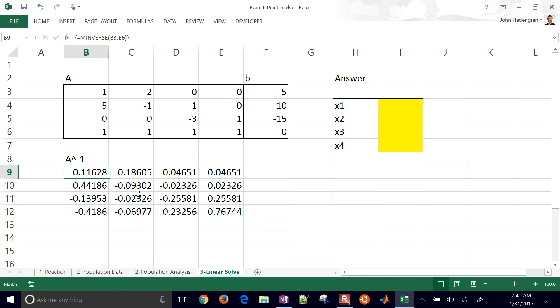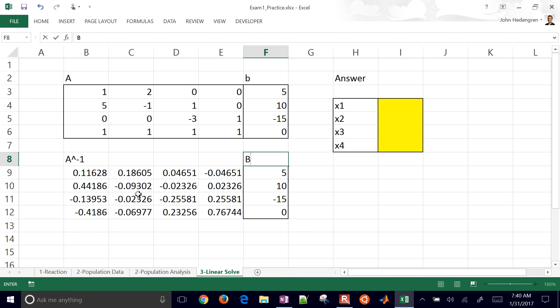And then we want to multiply A inverse times B. I'll just move this one down here just so we can have those next to each other. Okay, so we're going to do A inverse times B, and that's going to be our answer. So we're going to select this whole region right here. We're going to say equals to, and then we're going to do MMULT.